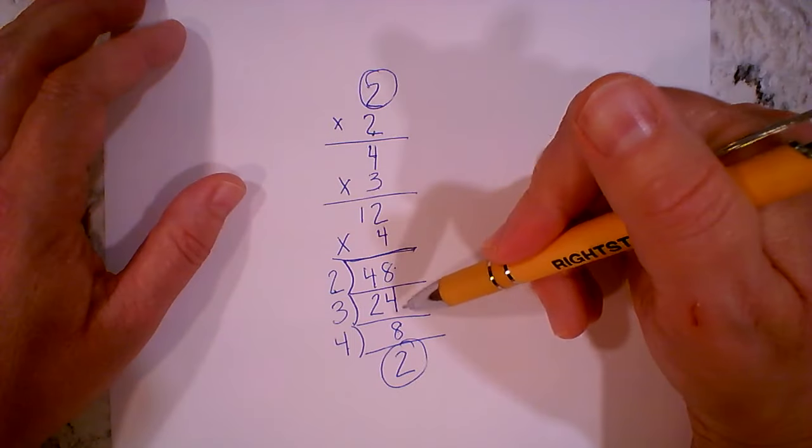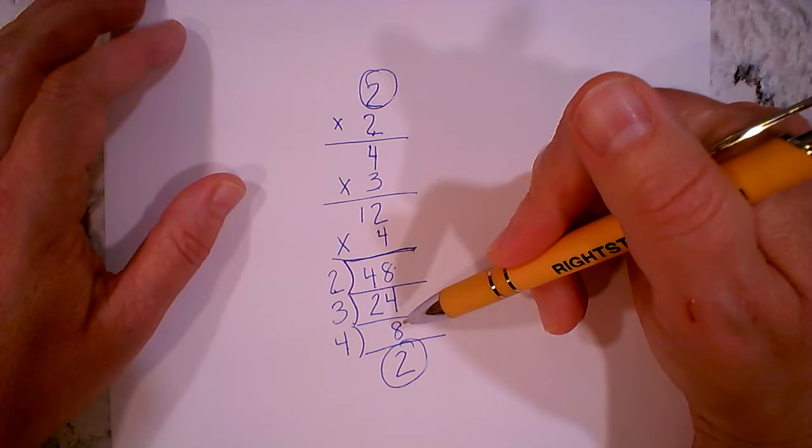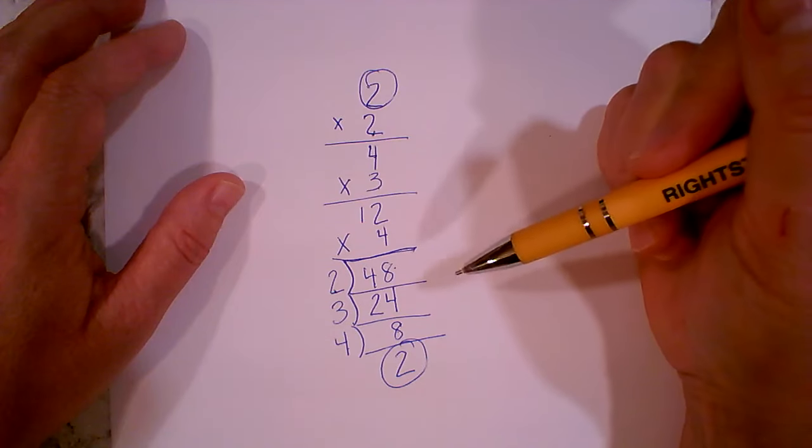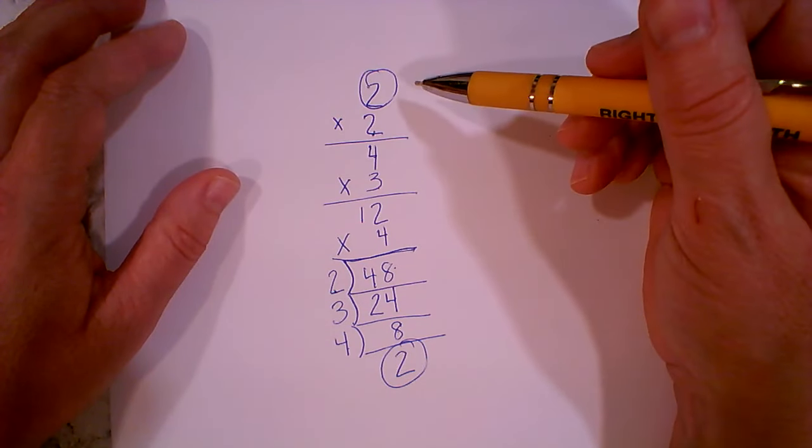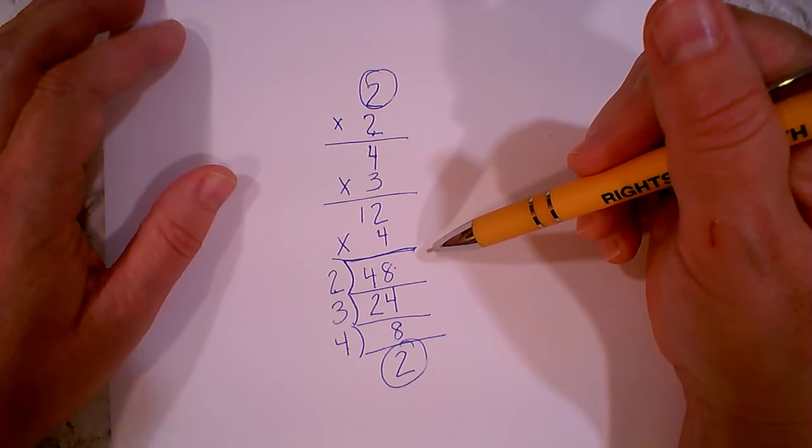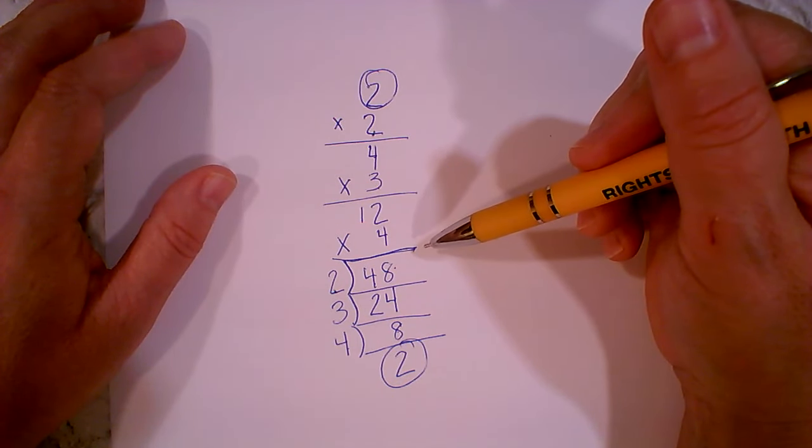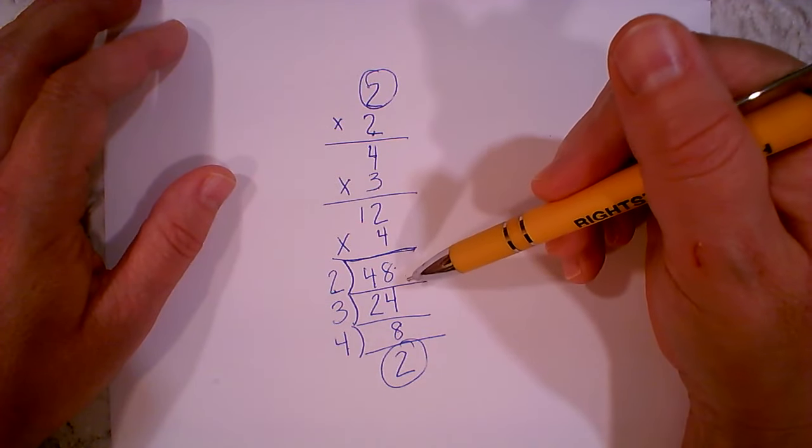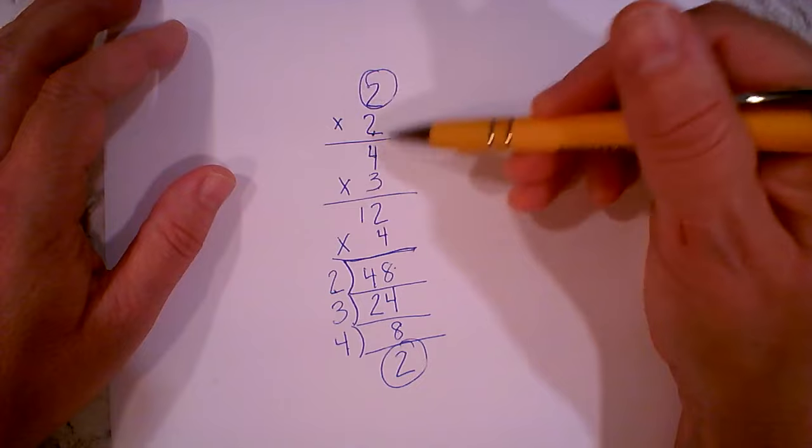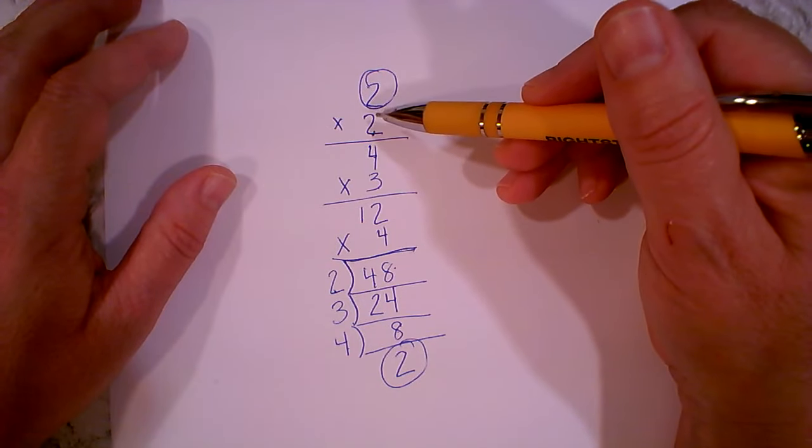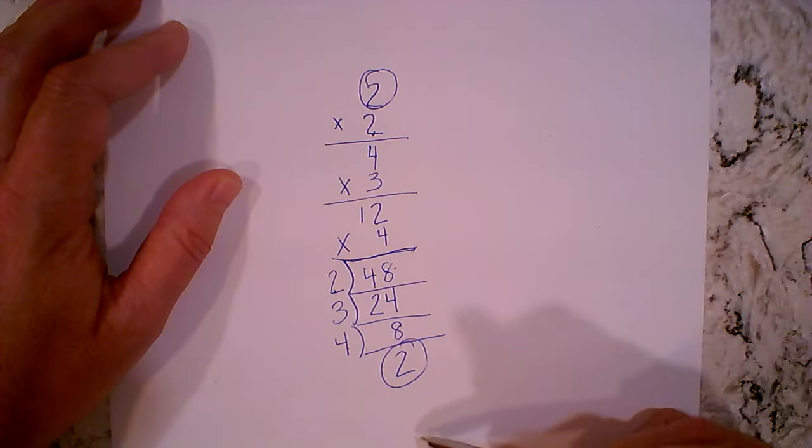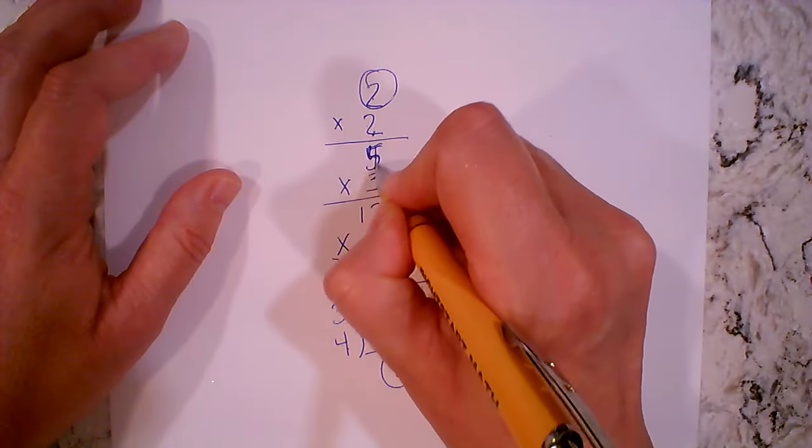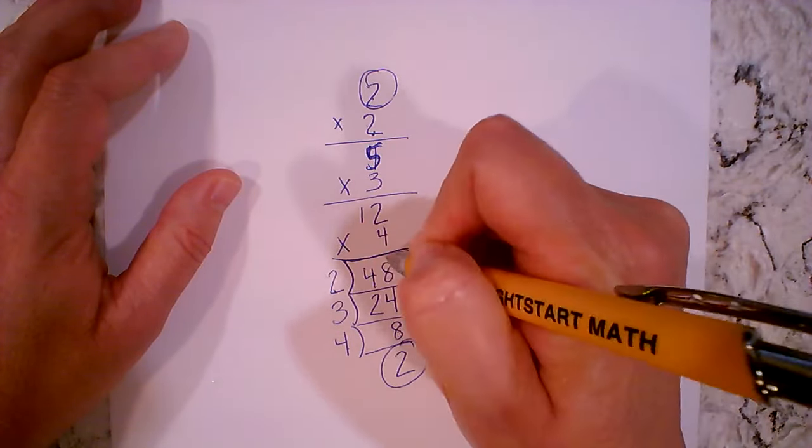You should never have any remainders. All of the division should be whole numbers. That being said, if there's a really long one, like in lesson 40, 42, or 43, if it's a really long one and you have an error early on, that means every answer after that is going to be wrong.